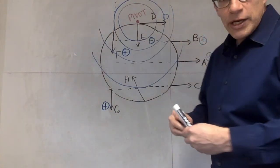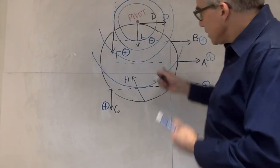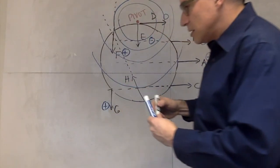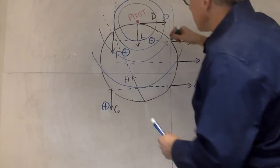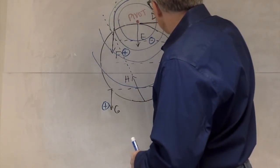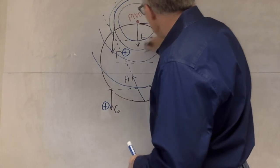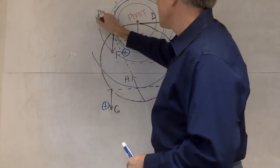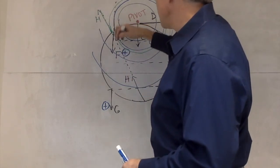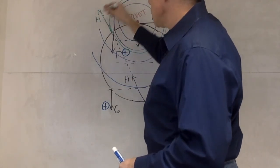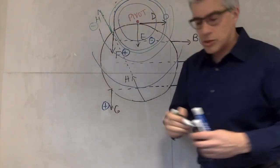Finally, H has its line of action this way, and its circle would be about this big. H would be pulling in that direction — you can slide it along its line of action — which is clockwise. So that's a negative torque.